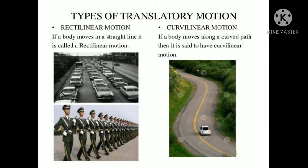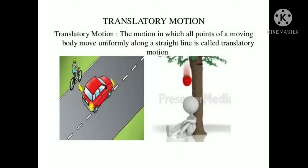Now we'll go through the types of motion. First is translatory motion. There are two types: one is rectilinear and one is curvilinear. Rectilinear means if a body moves in a straight line — like cars going in a straight line, or a march in a straight line. If a body moves along a curved path, then this is curvilinear motion.